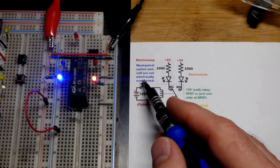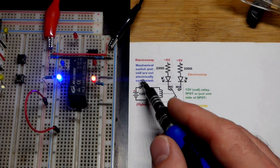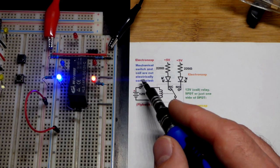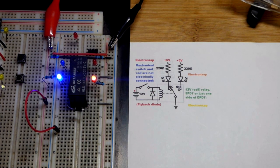de-energizing the coil. The coil does not stop current instantly, so we have a flyback diode to capture that energy.